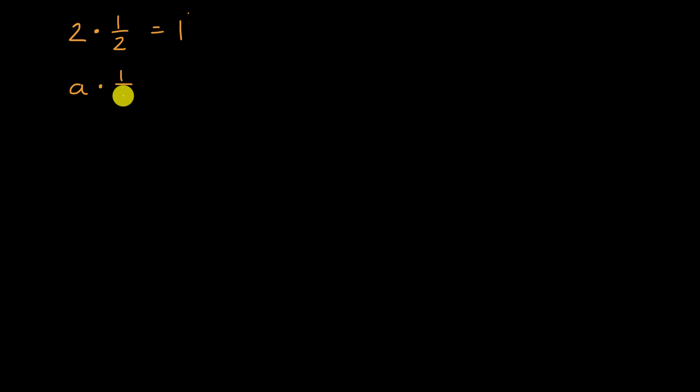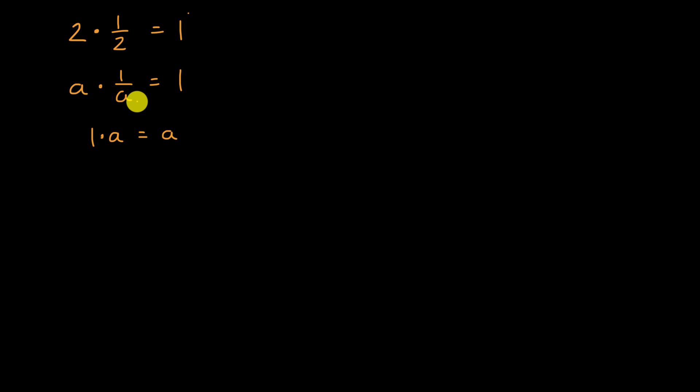We know that when we're just multiplying regular numbers, we have the notion of a reciprocal. For example, if I were to take two and multiply it by its reciprocal, it would be equal to one. Or if I were to take a, where a is not equal to zero, and multiply it by its reciprocal, for any a not equal to zero, this will also be equal to one. And this is a number that if I multiply it times anything, I'm just going to get that original number. You learned this many, many years ago.